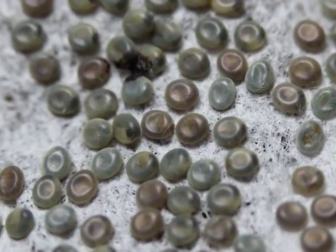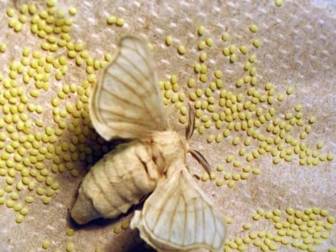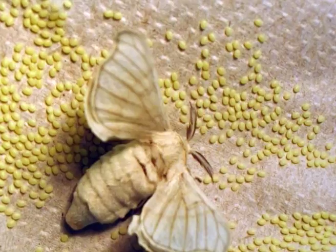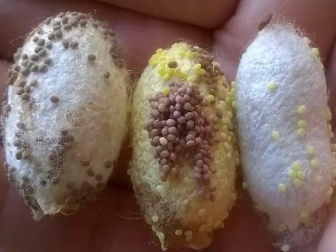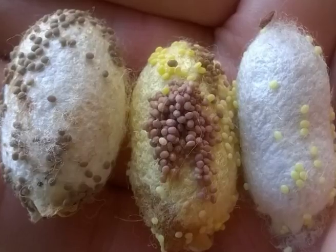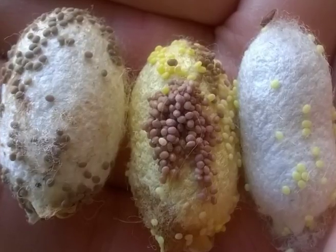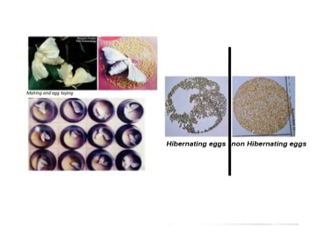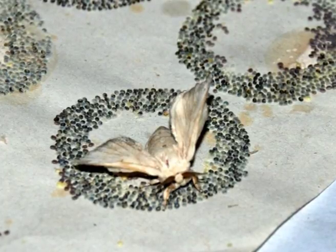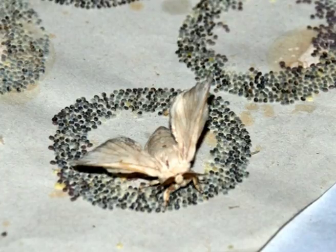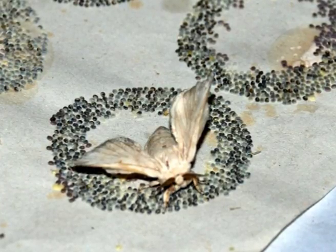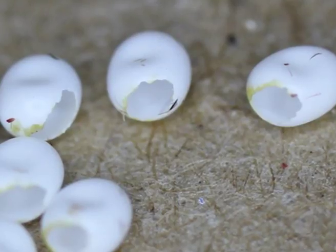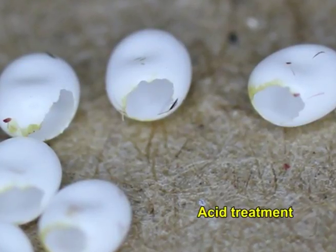Egg is the first life stage of the life cycle. A female moth lays about 400 eggs in a single laying. The size, weight, shape, and color of the egg as well as the number per laying vary among different races. The duration of the life cycle spent in the egg stage varies depending upon whether it is a hibernating or a non-hibernating egg. Hibernating eggs under natural conditions remain dormant for months together till the spring season in the next year. Diapause, that is a period of quiescence, can be broken artificially by acid treatment.